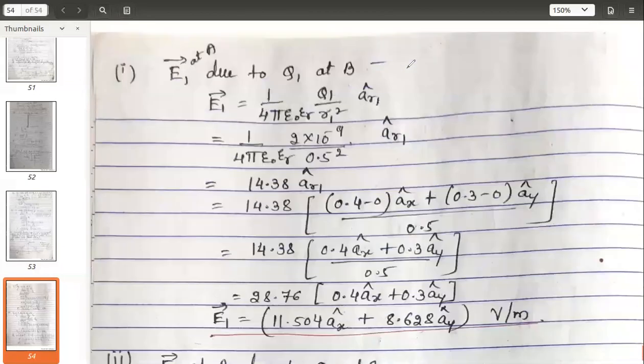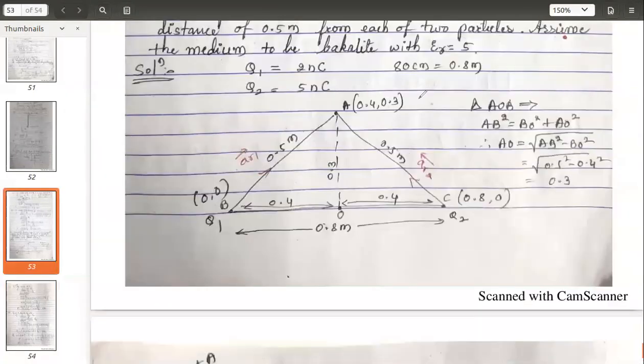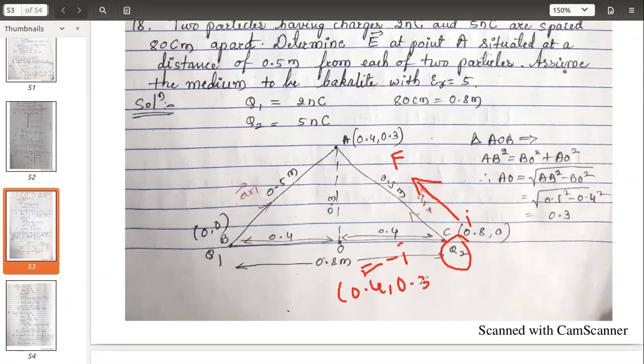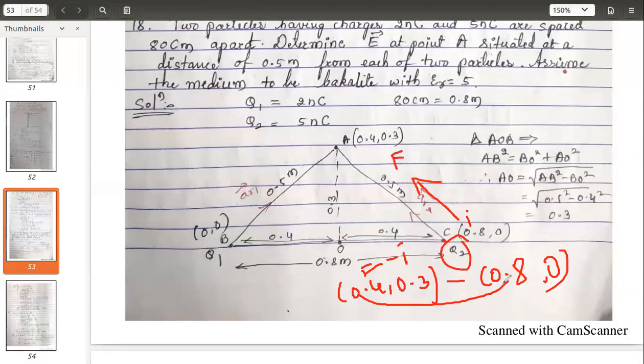So let's see how to find the unit vector for the second charge. Again, charge q2 is positive. According to the convention, the field lines diverge. Take this as the initial point, this as the final. Take f minus i: f is (0.4, 0.3) and i is (0.8, 0).